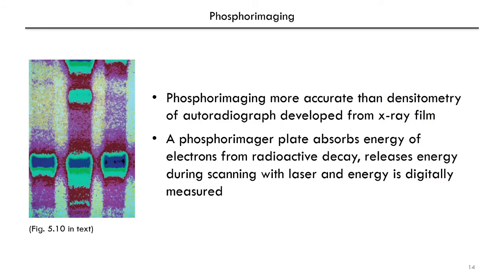An analogous method to developing an X-ray film is to use phosphor imaging. Phosphor imaging is more accurate than densitometry. Instead of X-ray films, you use specialized plates called phosphor imaging plates to absorb energy of electrons from radioactive decay. Using a phospho imager — an instrument that releases the energy in a scanning process with a laser — that energy can be measured digitally, which is a lot more accurate than looking at autoradiograms from an X-ray film.